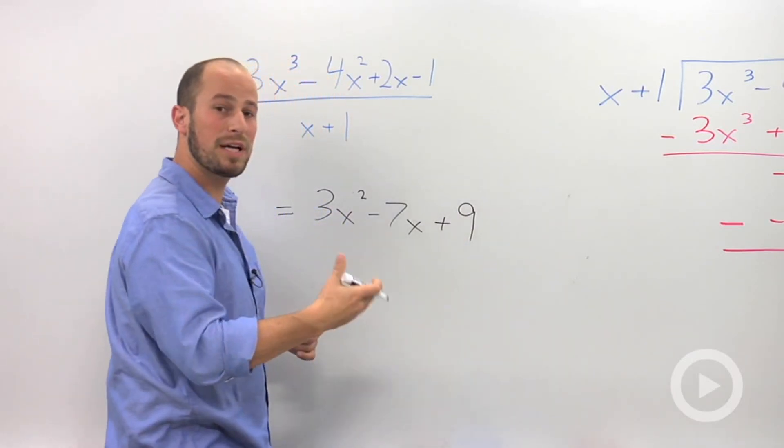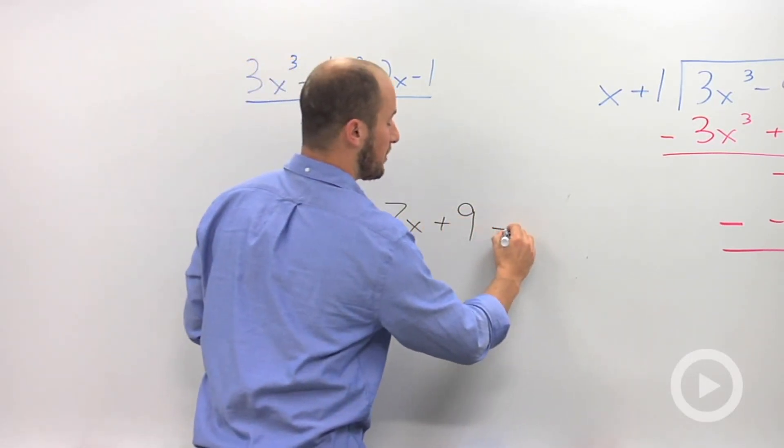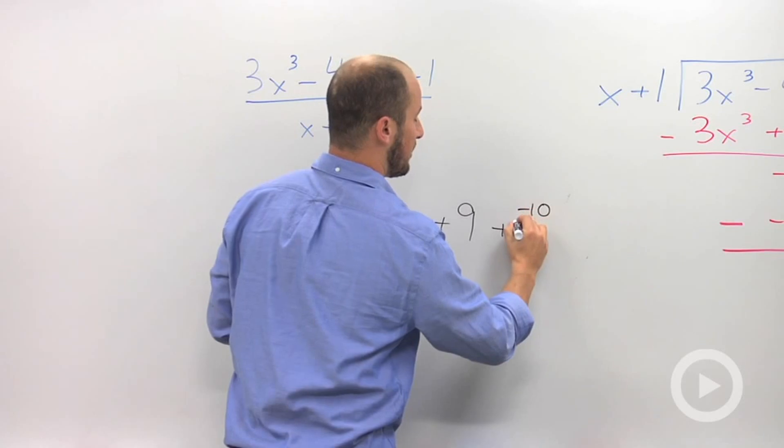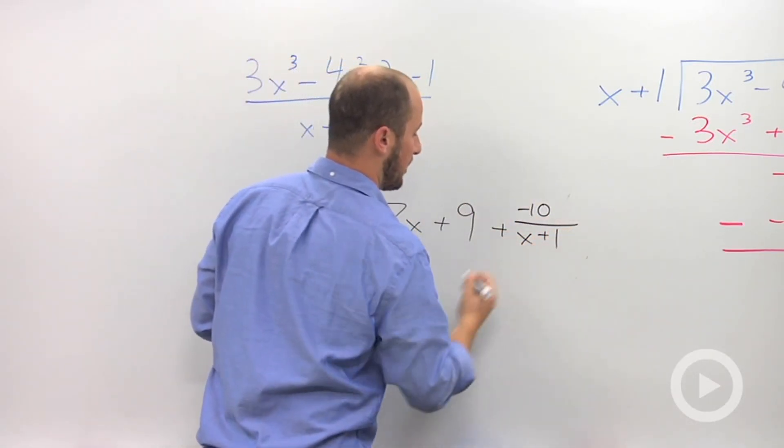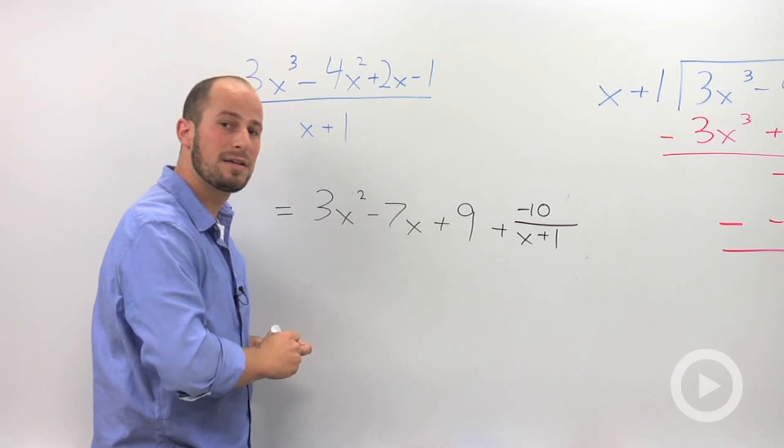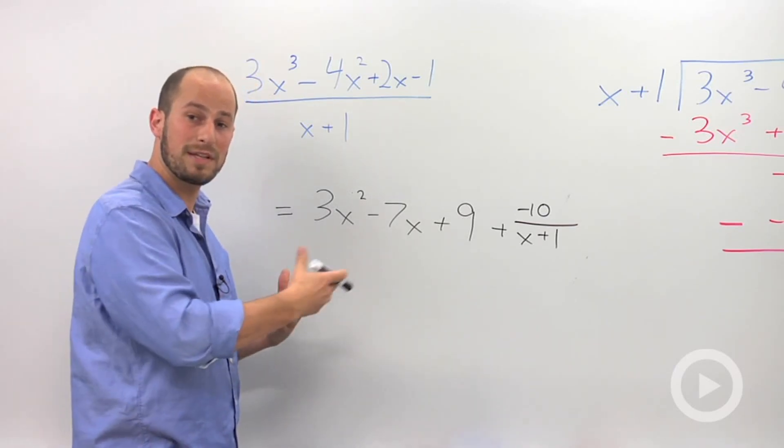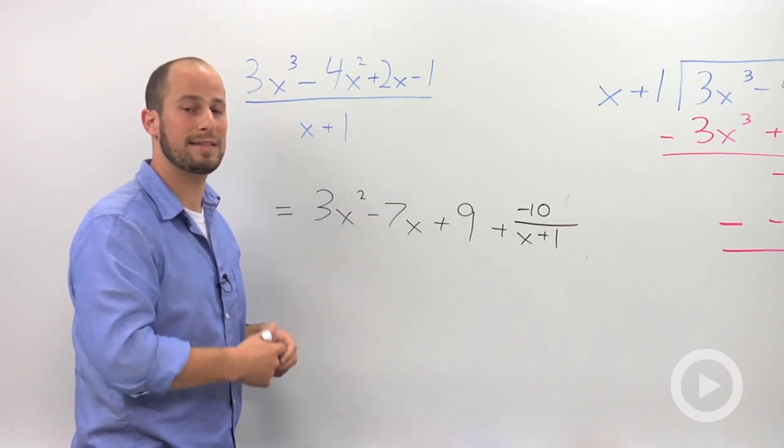So, that is 3x squared minus 7x plus 9. And then, plus a remainder over our divisor. So, this is then going to be plus negative 10 over our divisor here. x plus 1. Okay? So, long division. It's a little bit more involved in dealing with numbers, but the process is exactly the same.